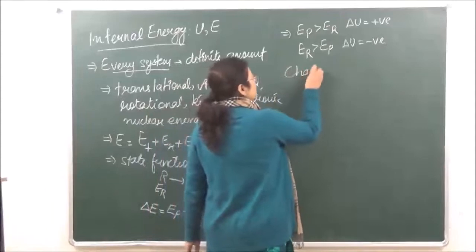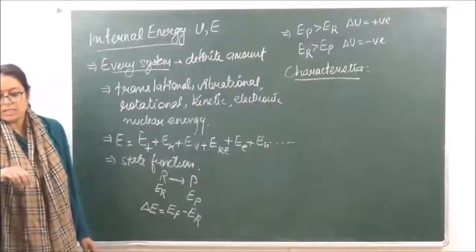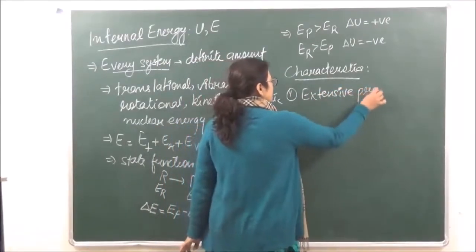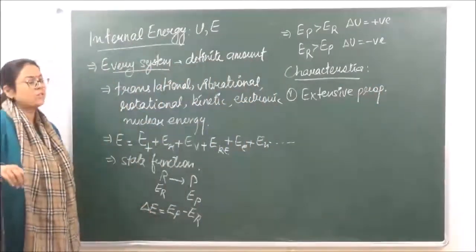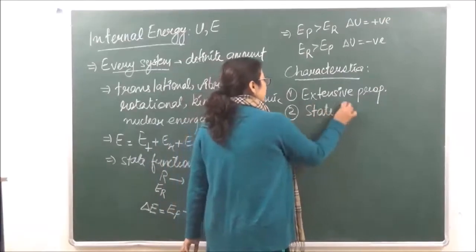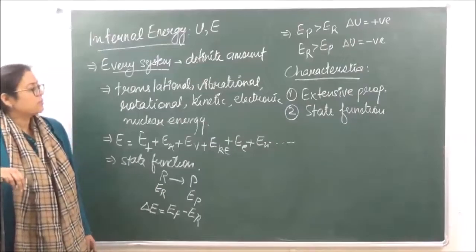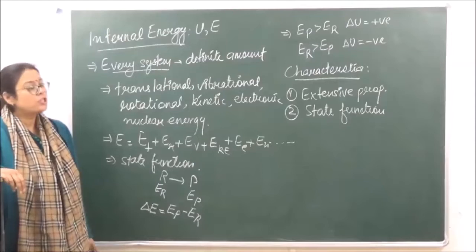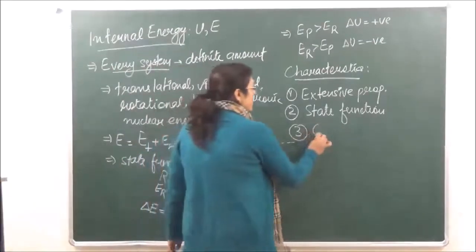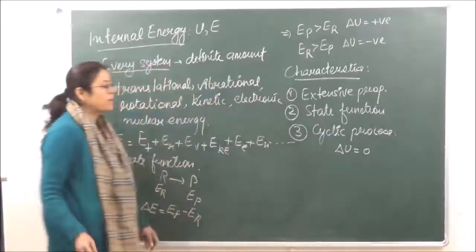What are the characteristics of internal energy? Number one: internal energy is an extensive property — it depends upon the size of the matter. Number two: it is a state function, which we have already discussed. Number three: the change in internal energy does not depend upon the path; it only depends upon the initial and the final state. And finally, there is no change in internal energy in a cyclic process — in a cyclic process the value of delta U becomes equal to zero.